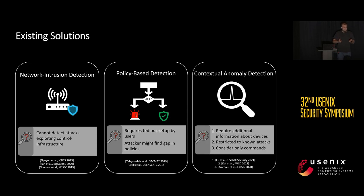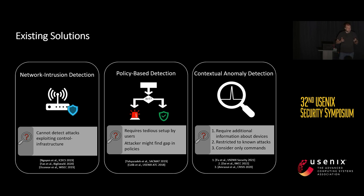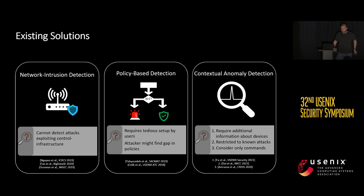The last category includes a few approaches that look at the context — the state of other devices. However, these have different weaknesses. Some approaches require additional knowledge about IoT devices, which is sometimes not available. A second category requires training data for attacks, restricting them to known attacks and preventing detection of unknown ones. The last subcategory considers only the invoked commands but does not consider the state of the IoT device itself.